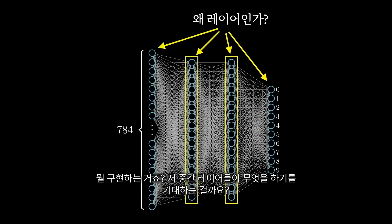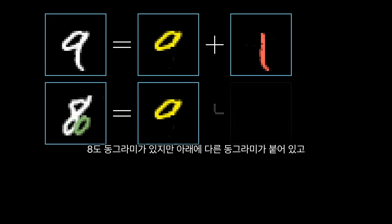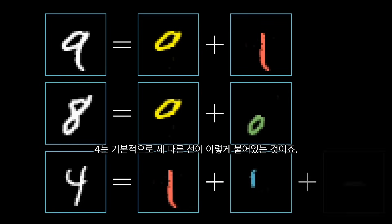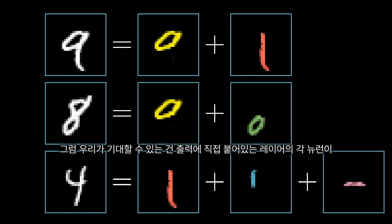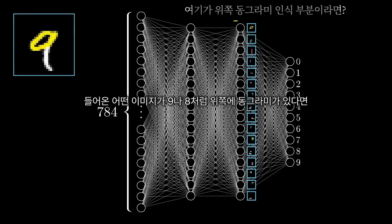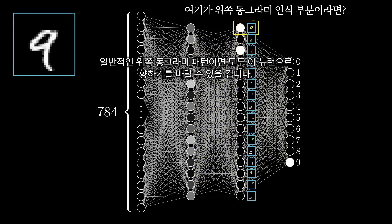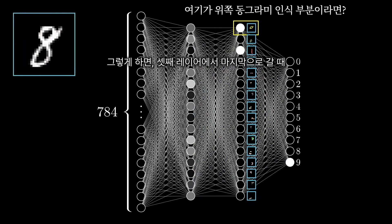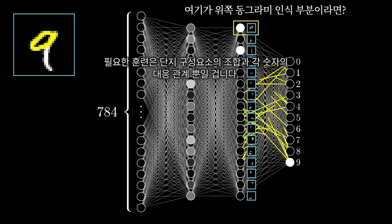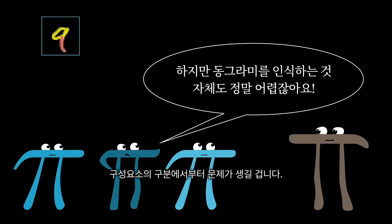What are we expecting here? What is the best hope for what those middle layers might be doing? Well, when you or I recognize digits, we piece together various components. A 9 has a loop up top and a line on the right. An 8 also has a loop up top, but it's paired with another loop down low. A 4 basically breaks down into 3 specific lines, and things like that. Now in a perfect world, we might hope that each neuron in the second to last layer corresponds with one of these subcomponents — that anytime you feed in an image with, say, a loop up top like a 9 or an 8, there's some specific neuron whose activation is going to be close to 1. And I don't mean this specific loop of pixels; the hope would be that any generally loopy pattern towards the top sets off this neuron. That way, going from the third layer to the last one just requires learning which combination of subcomponents corresponds to which digits. Of course, that just kicks the problem down the road, because how would you recognize these subcomponents, or even learn what the right subcomponents should be?